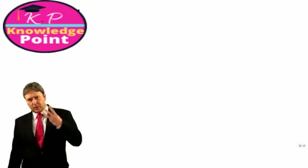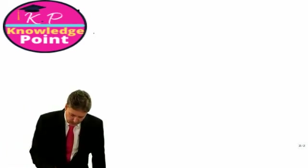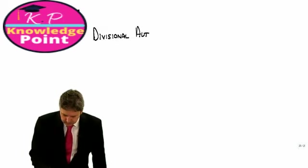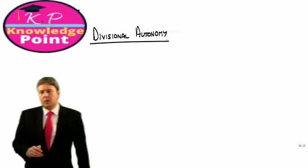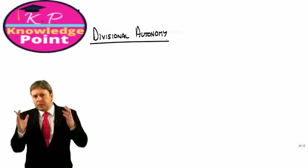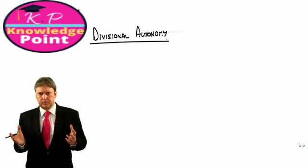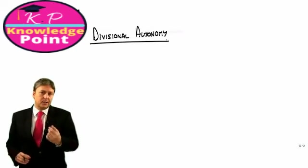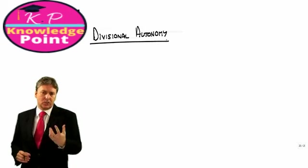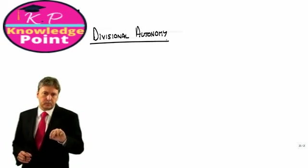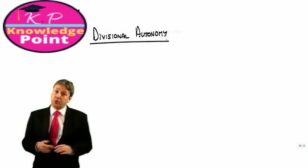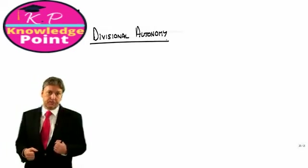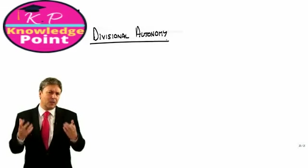The third area that we have to be aware of with regard to transfer pricing is divisional autonomy. When we're looking at anything to do with divisional performance appraisal, we always argue that the divisions should be autonomous. That means the divisions should be able to make decisions regarding what they do. And based on that, we could argue that the transfer price should be set by discussions between the buying and the supplying division. Can we allow that to happen?